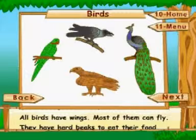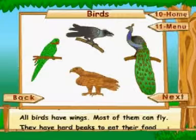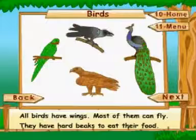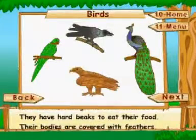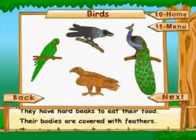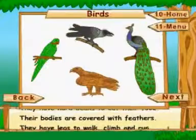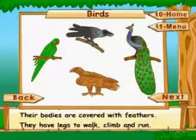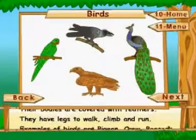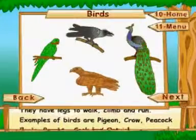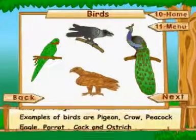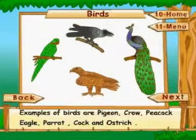Birds. All birds have wings and most of them can fly. They have hard beaks to eat their food. Their bodies are covered with feathers. They have legs to walk, climb and run. Examples of birds are pigeon, crow, peacock, eagle, parrot, cock and ostrich.